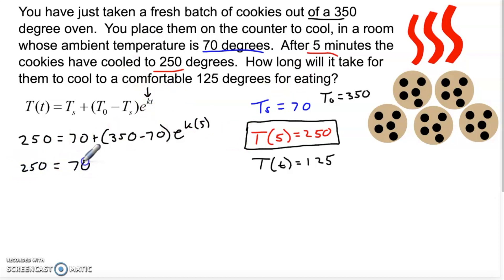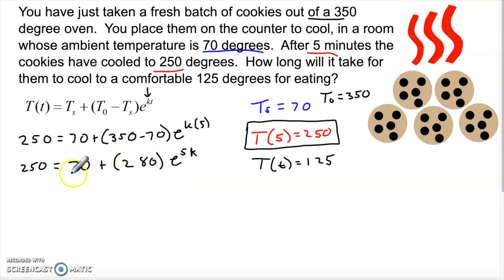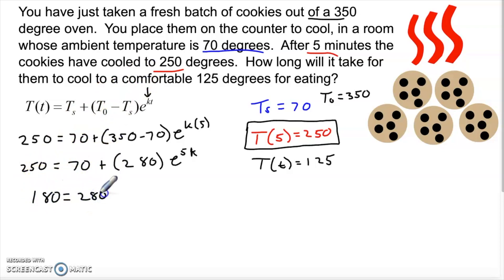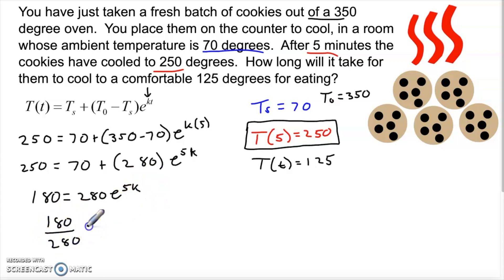Simplifying: 250 = 70 + 280e^(5k). We said k will be negative — you can see why, since we need to chip away at that 280 being added to 70 so it works down to room temperature. Subtract 70 from both sides: 180 = 280e^(5k). Divide both sides by 280: 180/280 = e^(5k). Take the natural log of both sides, giving 5k = ln(180/280), so k = (1/5) × ln(180/280).